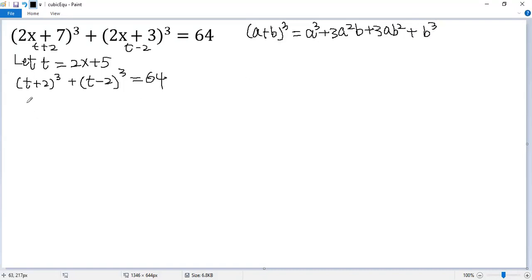So the first term becomes t³ + 3t²(2) + 3t(2²) + 2³. For the second term, (a-b)³ equals—here's minus, plus, and minus.